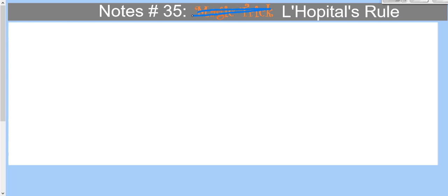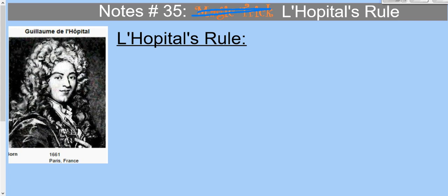We have this gentleman named Guillaume de L'Hôpital, born in Paris, France in 1661. He figured out that if you're evaluating a limit and you get 0/0, or infinity over infinity, or negative infinity over negative infinity, then you get the same answer by finding the derivative of the top and the derivative of the bottom and evaluating that limit.